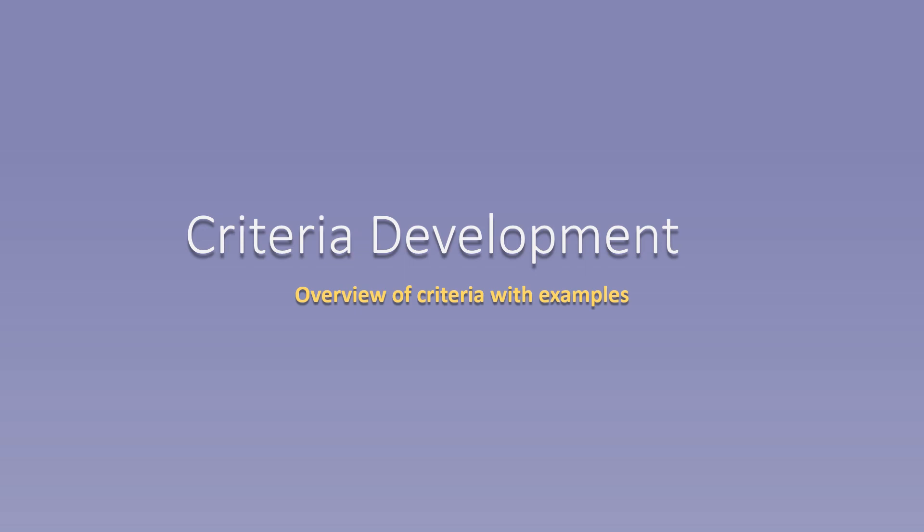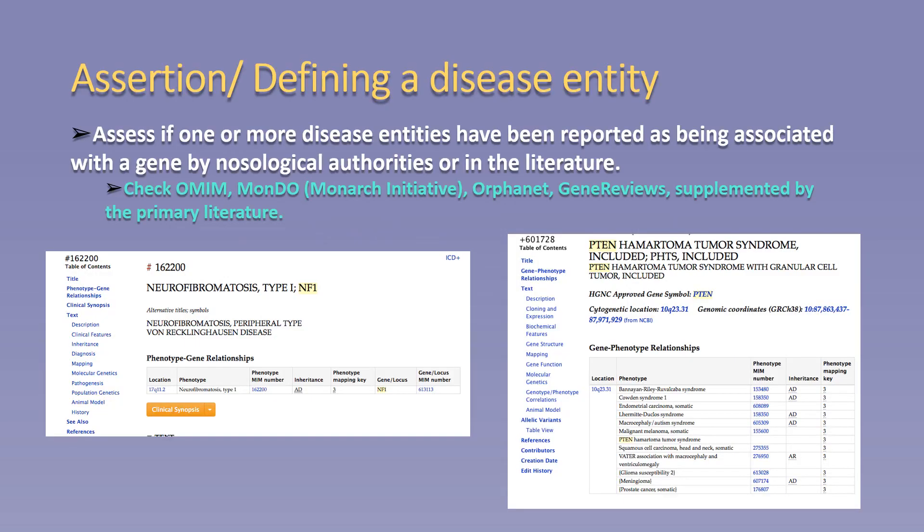Now I will review how the criteria were developed with examples. The first criteria is assertion, or defining a disease entity. A curator should assess if one or more disease entities have been reported in association with the gene of interest. This can be done by reviewing nosological and ontological sites such as OMIM, Orphanet, and Monarch Initiative. Gene Reviews is another great resource. The primary literature can be used as a supplement and may be essential in newly associated gene disease relationships.